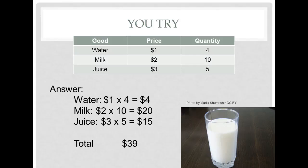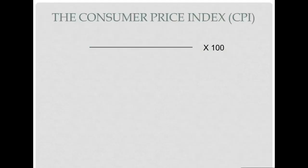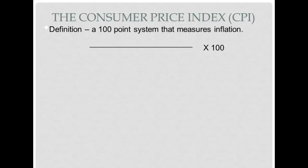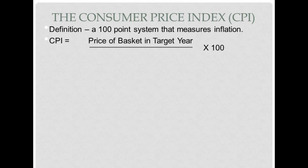We need the basket value because we use it to calculate the Consumer Price Index, better known as the CPI. The CPI is a 100-point system used to measure inflation — an index, like the 1-to-5 scale for tornadoes or hurricanes, but for inflation. The formula is: CPI = (price of basket in the target year ÷ price of basket in the base year) × 100.